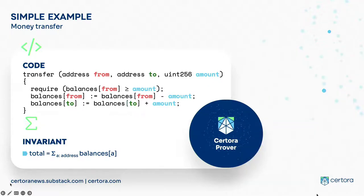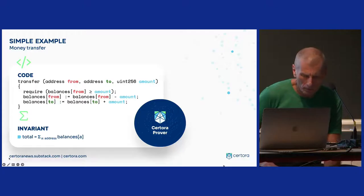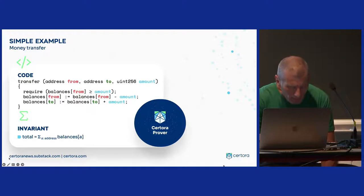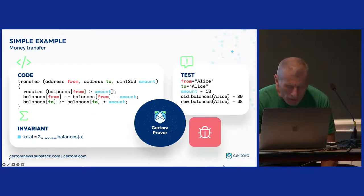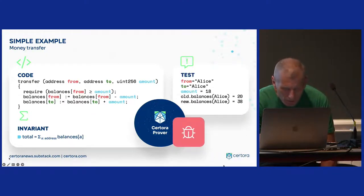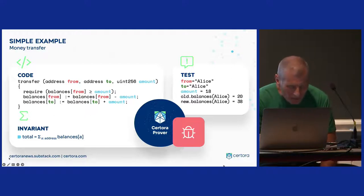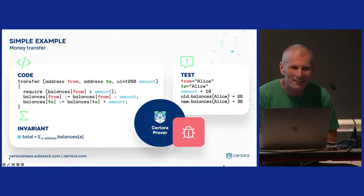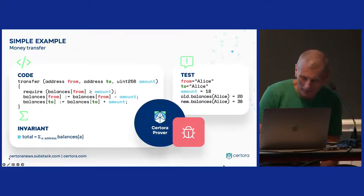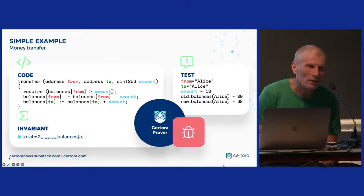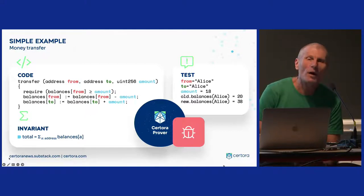You get this proof. The idea is if you write the code with a bug, the tool will actually find the bug — you will see this later. Tomorrow Thomas Bernardi will explain how the tool is working.